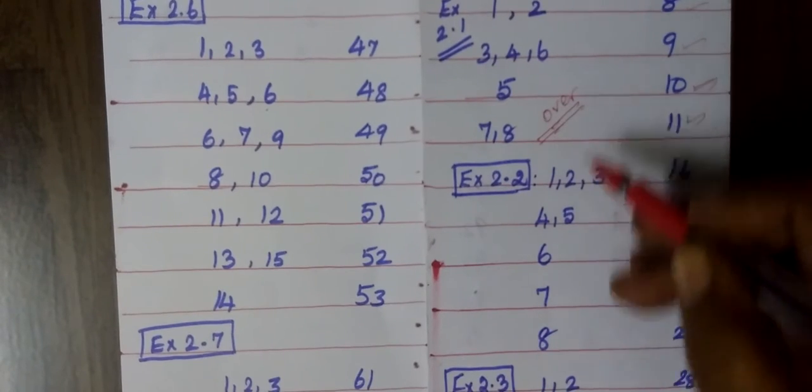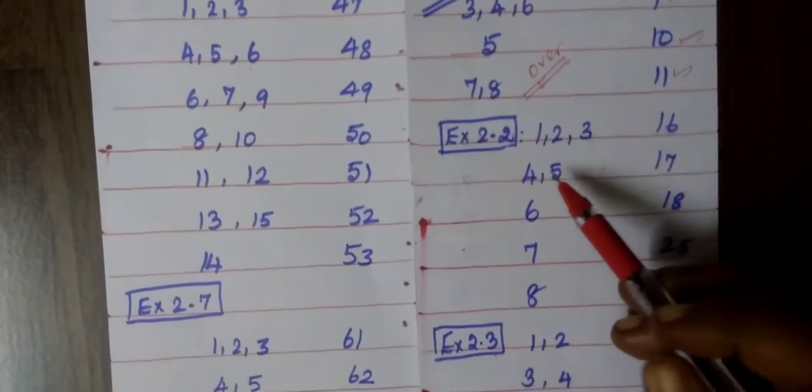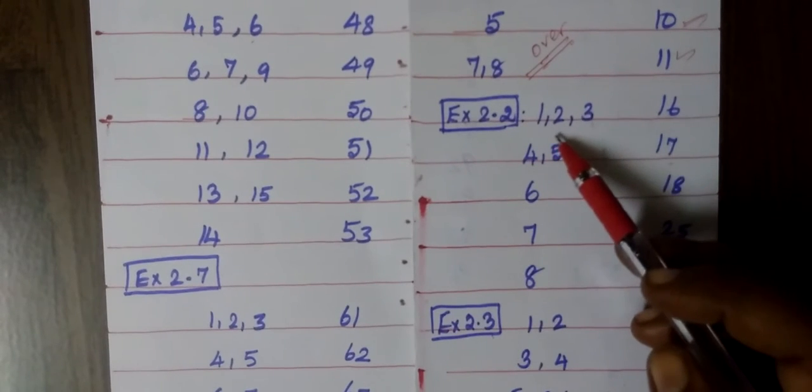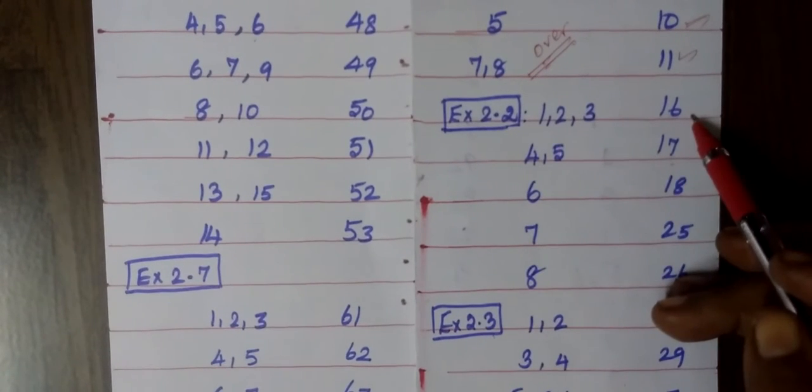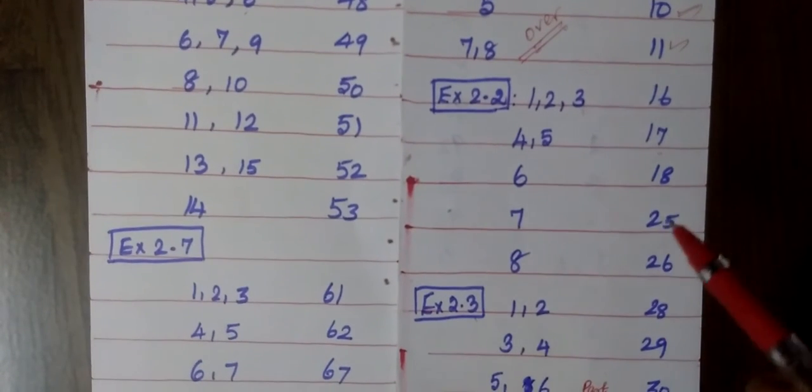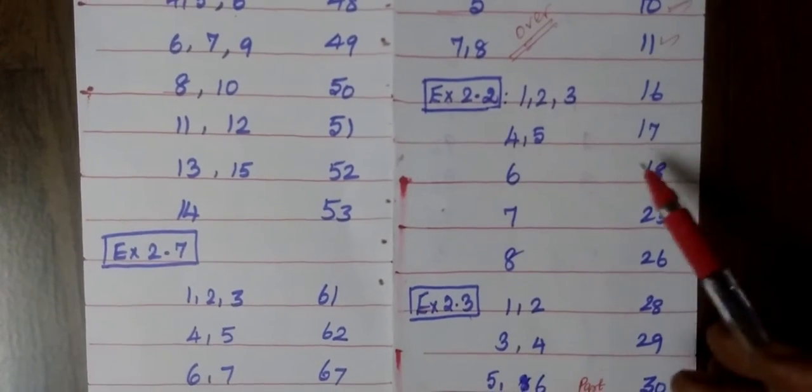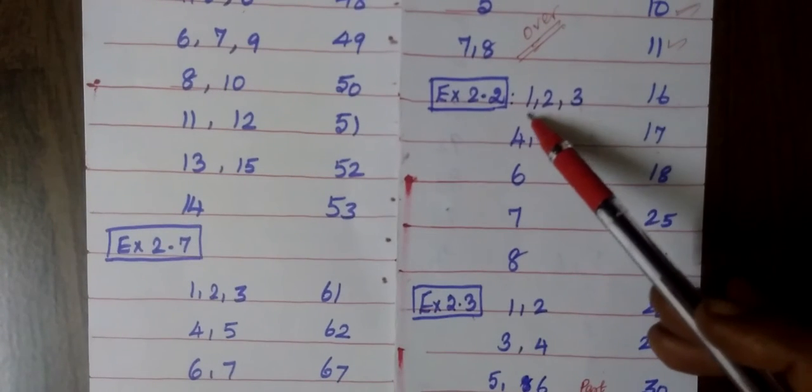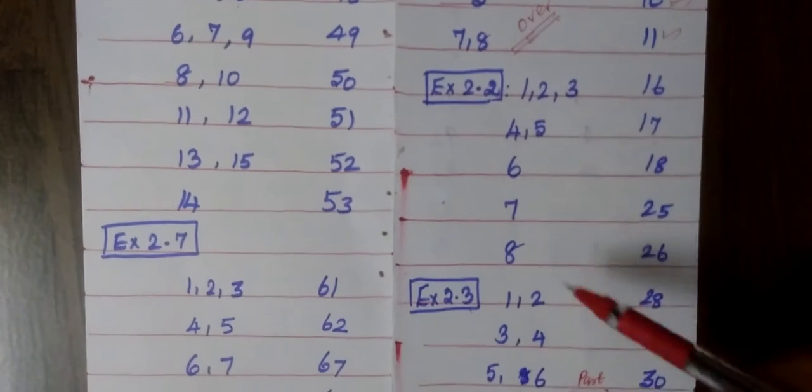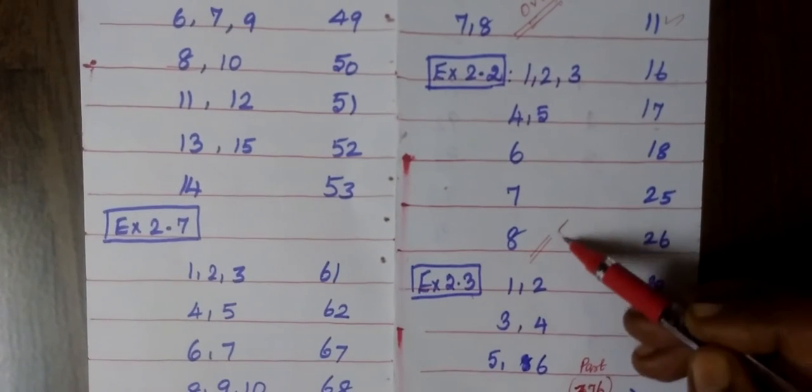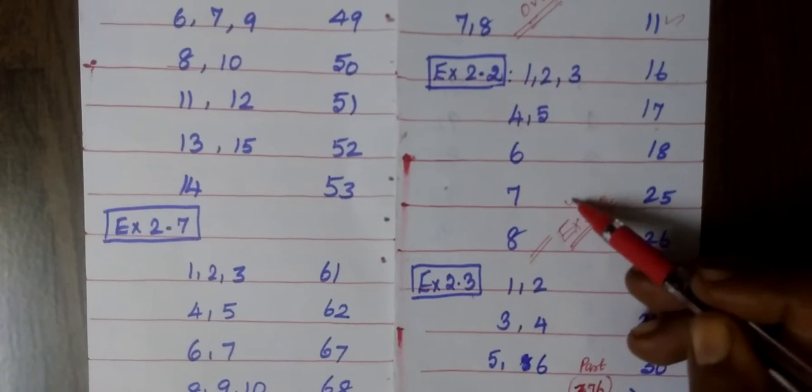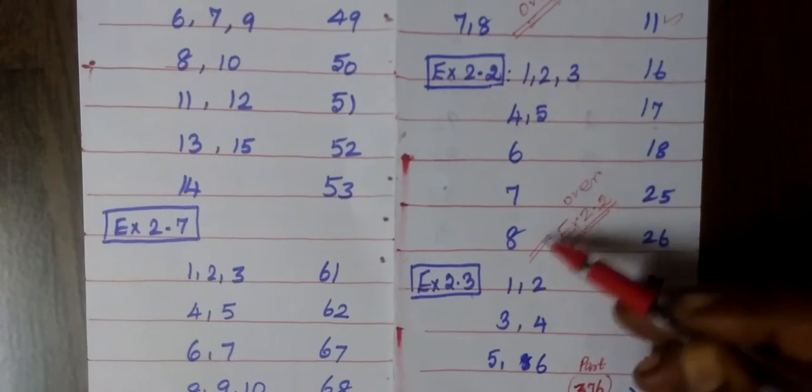You can see the link in the description box. Now coming to Exercise 2.2. See question number 1, 2, 3 in part number 16. You just see in the description box. Now I read only the question numbers 1 through 8. So Exercise 2.2 is over, totally 8 questions.